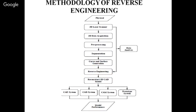The methodology of reverse engineering: first we have the physical object, then we go to scanning using contact and non-contact 3D scanners. After scanning we go to pre-processing. In pre-processing there are steps like segmentation, noise reduction, and surface and curve creation. The final target of reverse engineering is to construct a valid 3D geometric model from the scan data.